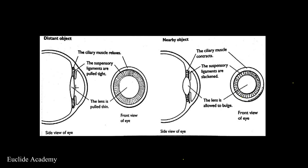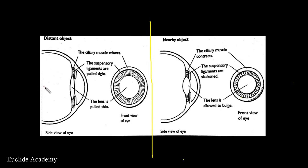Let us look at this image so we know what we are talking about. We are talking about the ciliary muscles, which are the muscles here around the lens. This is a side view and this is a front view. We are talking about objects that are distant — if we cut this image into two, we can see this part talks about a distant object and this one is a nearby object, showing how they are affected.